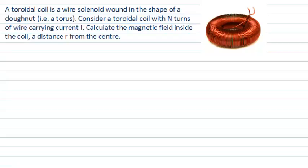You can see that there's a particular arrangement of a current carrying wire that's been wound into a coil, a toroidal coil, sometimes thought of as a doughnut shape, or strictly speaking a torus.